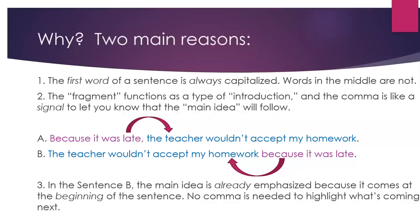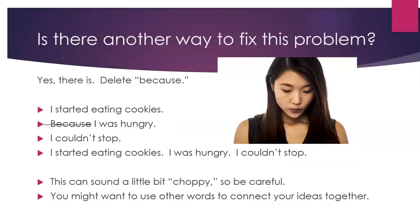For example: A) 'Because it was late, the teacher wouldn't accept my homework.' B) 'The teacher wouldn't accept my homework because it was late.' In sentence B, the main idea is already emphasized because it comes at the beginning of the sentence, so no comma is needed to highlight what's coming next. Is there another way to fix this problem? Yes — delete 'because.' For example: 'I started eating cookies. I was hungry. I couldn't stop.' This can sound a little choppy, so be careful. You might want to use other words to connect your ideas together.